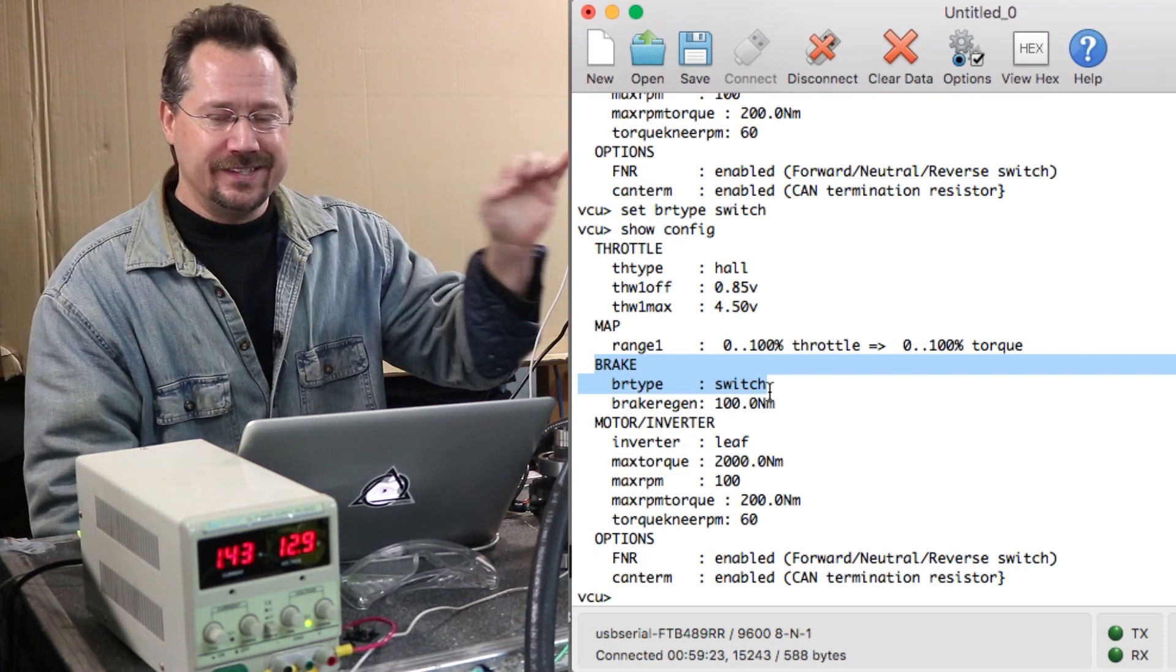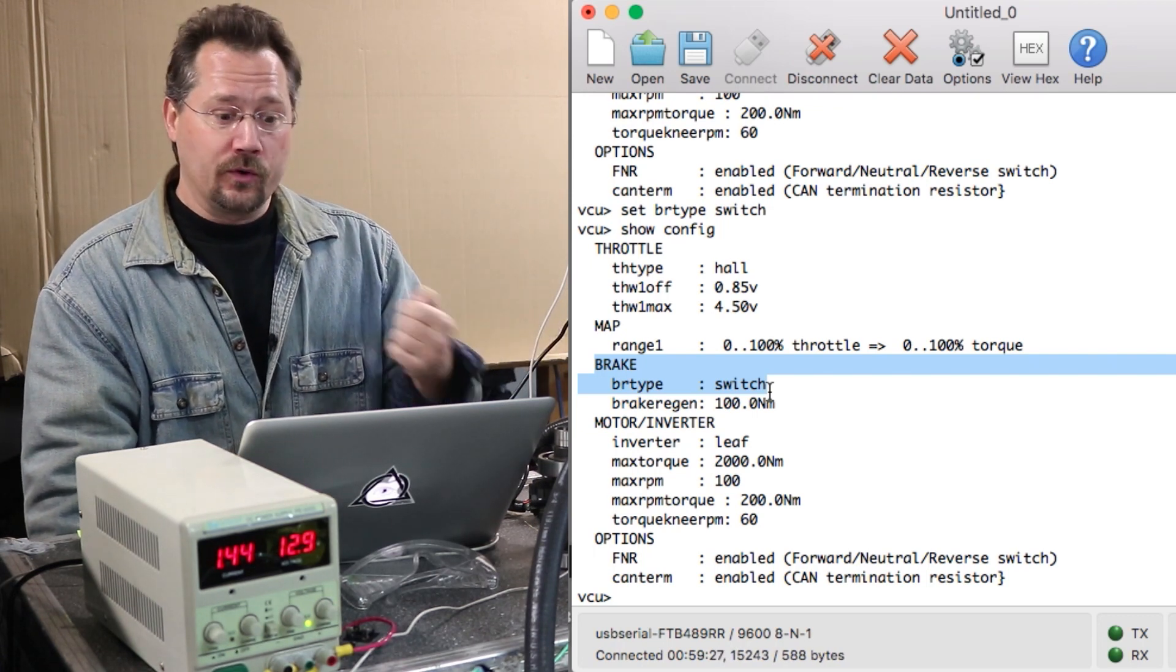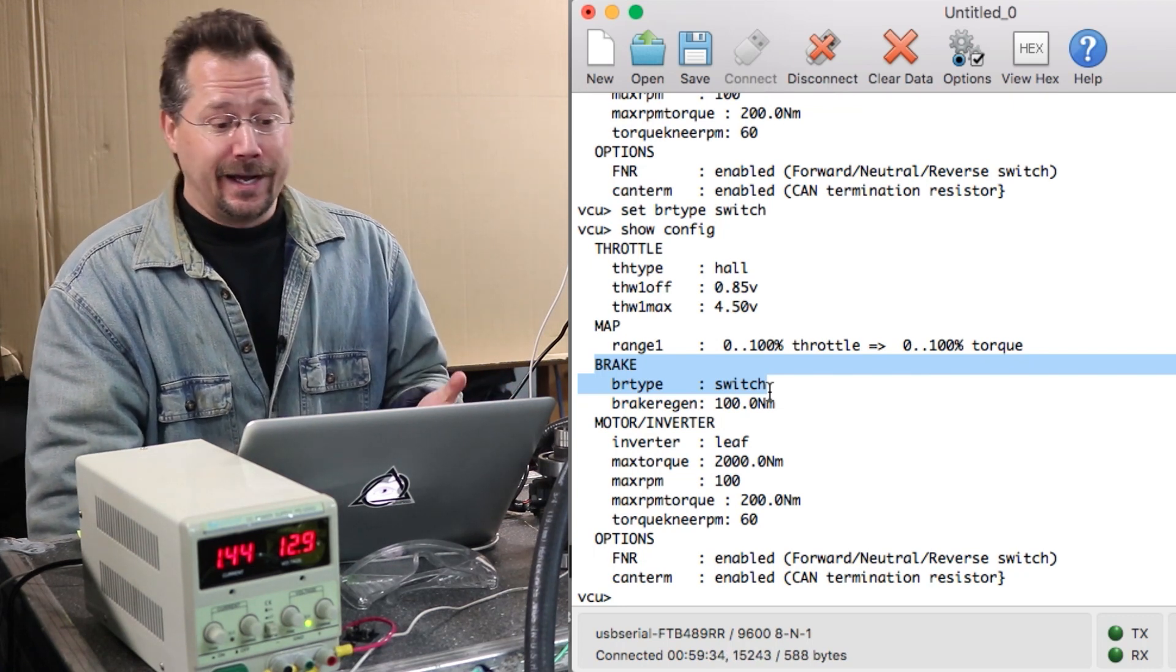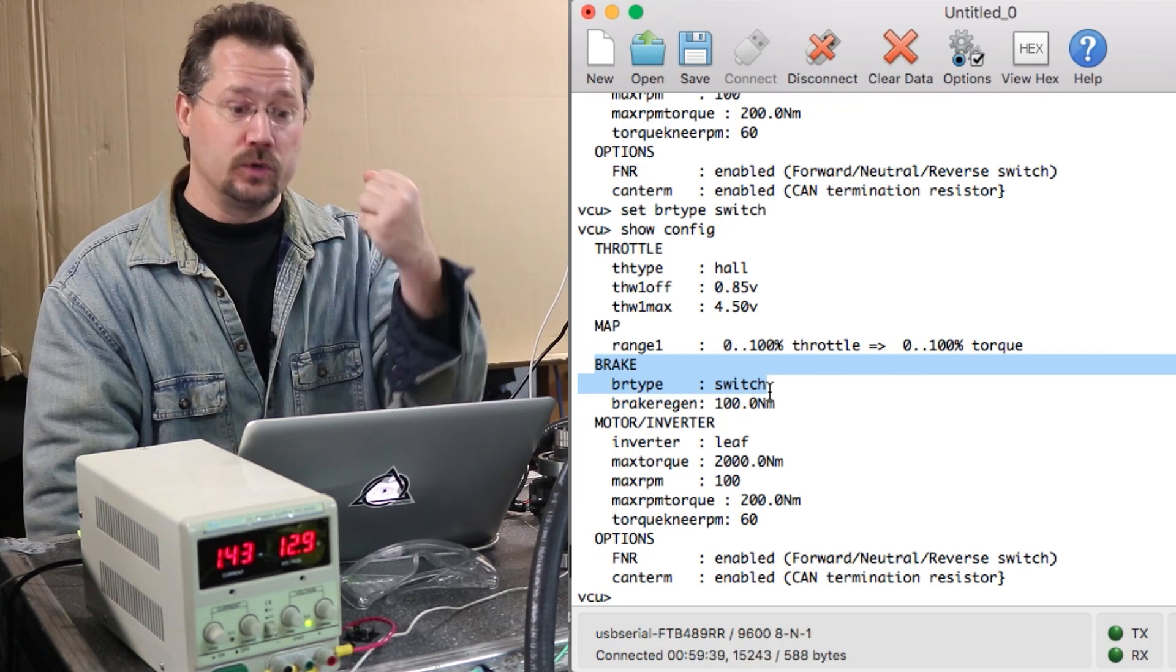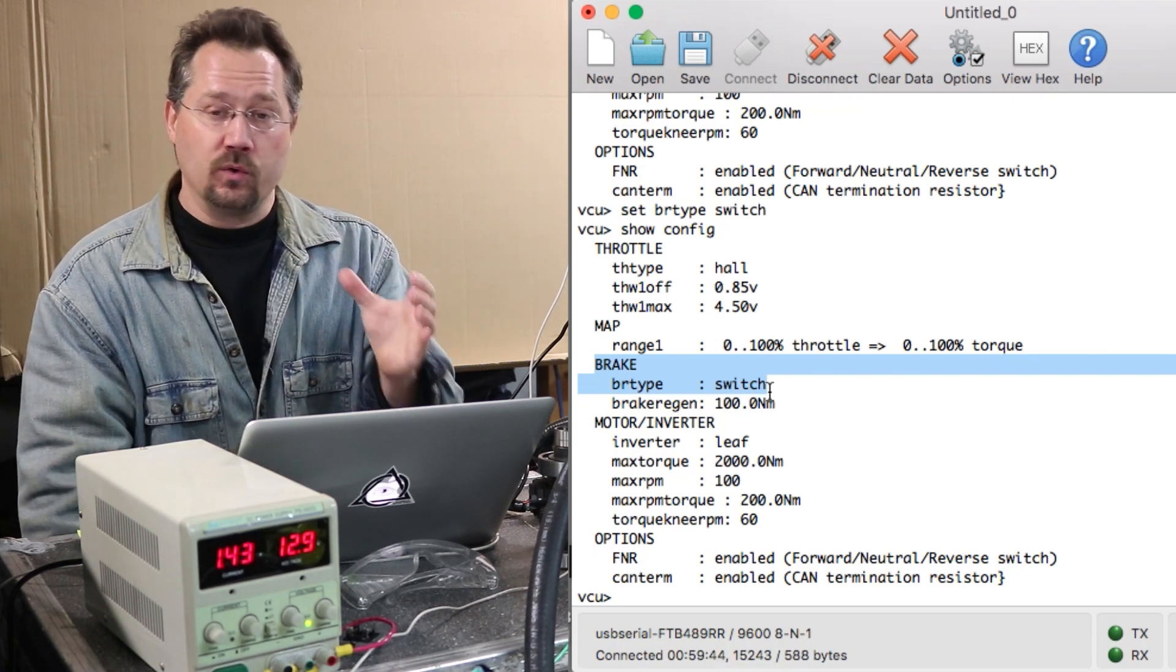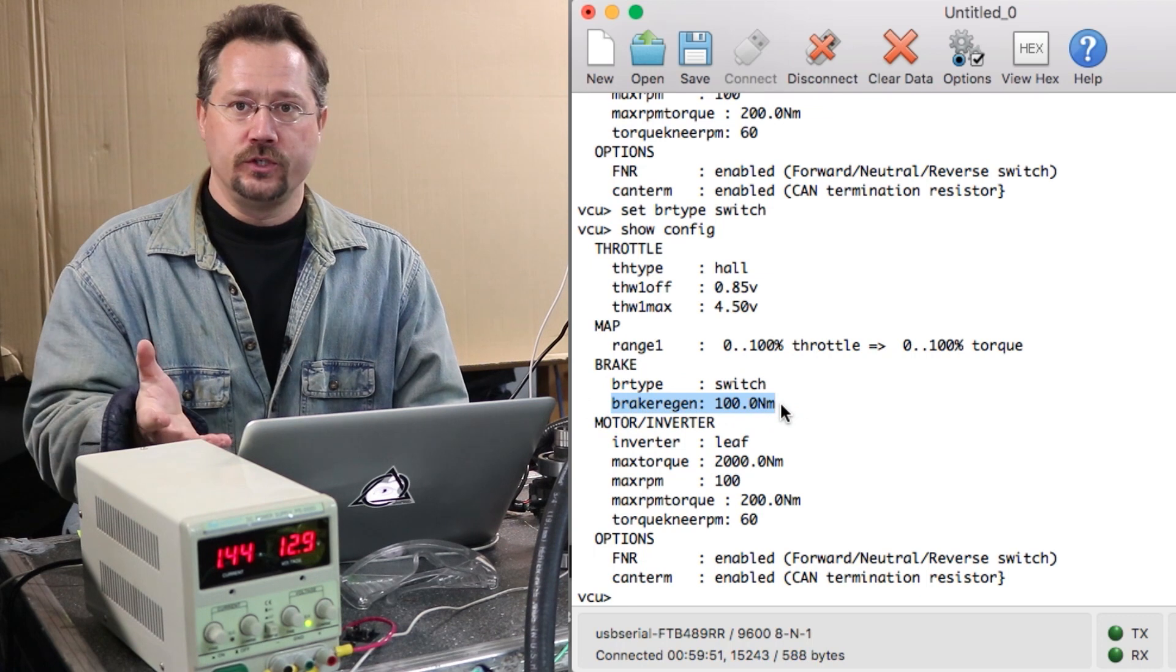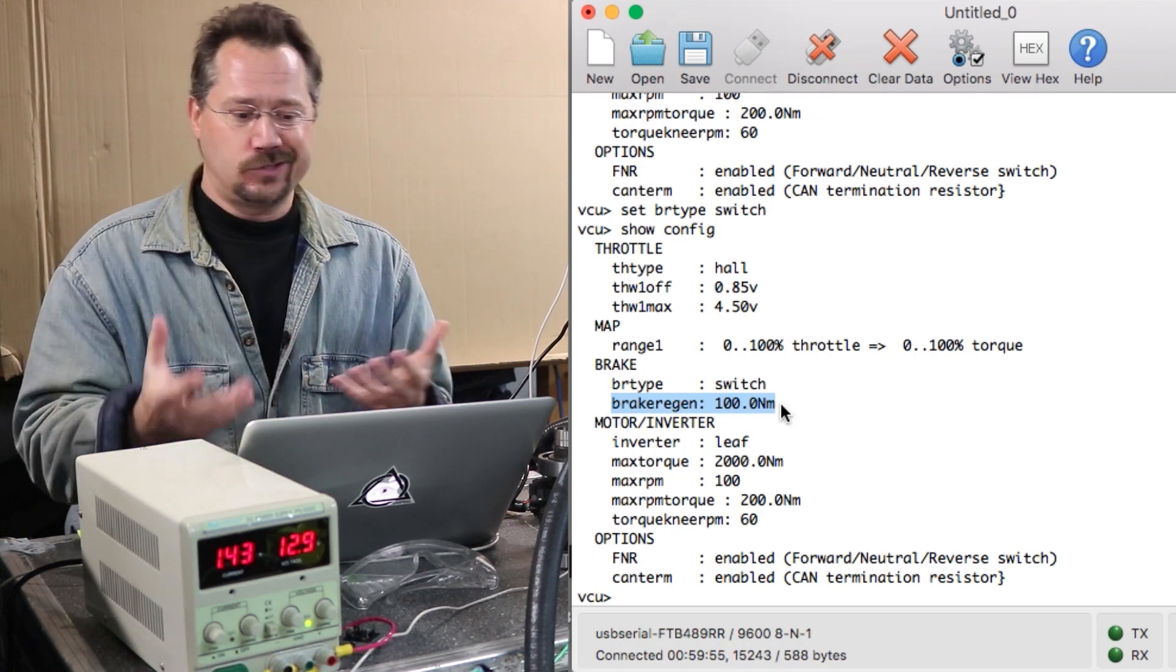Where I've got the forward neutral reverse switch right now that input is instead used as an input to let the VCU know whether or not the brake is being pressed. So for example you could essentially wire up from your brake light to this input and the moment you touch the brake it's going to start doing regenerative braking. Except this is going to be at a set amount of regen, it's not going to be variable.